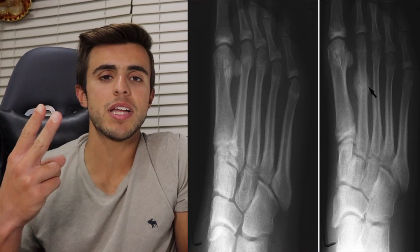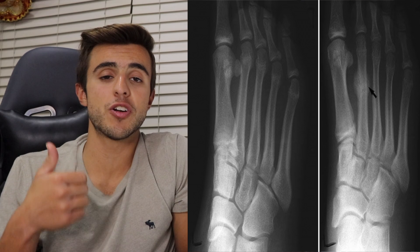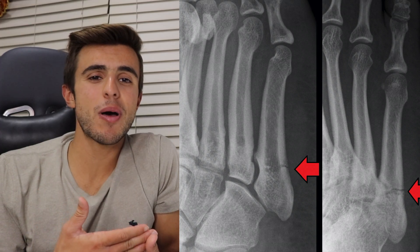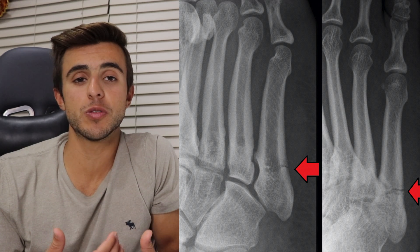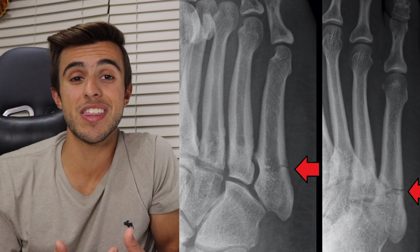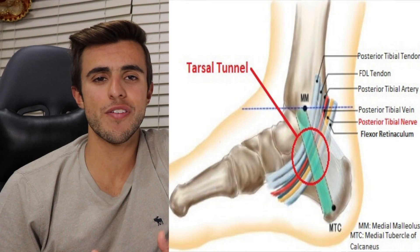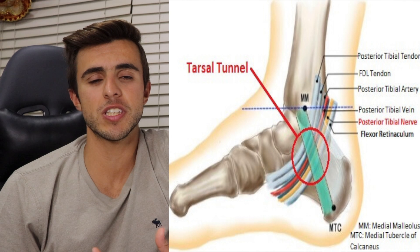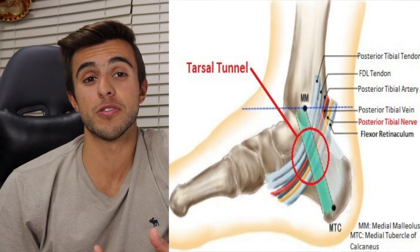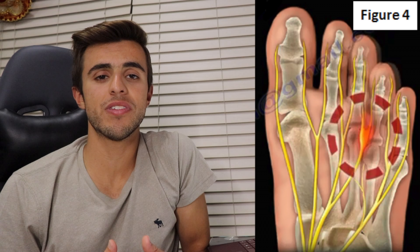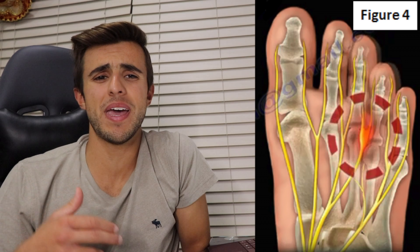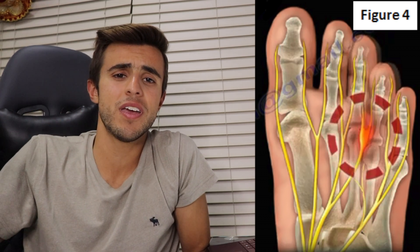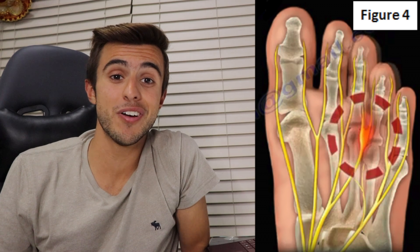Another big injury I learned about was foot fractures. There are two types: a stress fracture to the foot and a traumatic fracture to the foot. I also learned about very specific injuries like a Jones fracture or a Dancer's fracture, which is a fracture to the proximal base of the fifth metatarsal. Then there are nerve injuries like tarsal tunnel syndrome, where your tibial nerve gets entrapped in your tarsal tunnel, and Morton's neuroma, which is an injury to the digital nerves of your third and fourth metatarsal causing pain from metatarsal two through four.